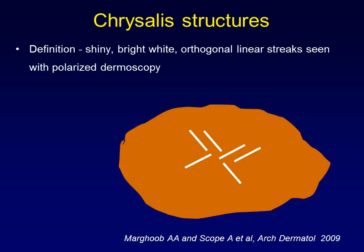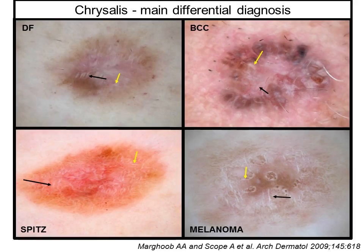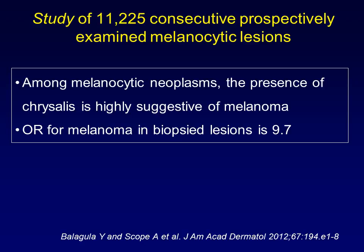Chrysalis structures are shiny white orthogonal lines seen with polarized dermoscopy. They're seen in dermatofibromas, basal cell carcinomas, Spitz nevi, and melanoma. Among melanocytic neoplasms, the presence of chrysalis is highly suspicious for melanoma.